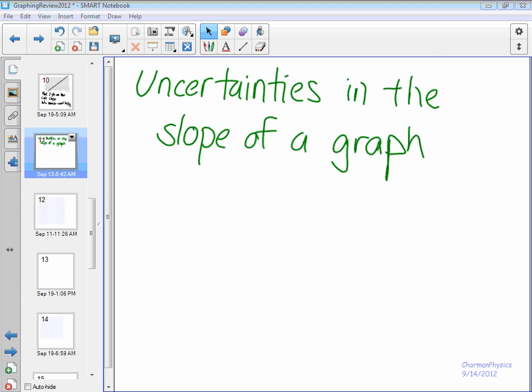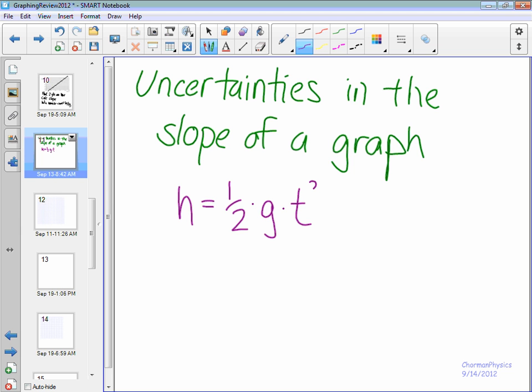Don't worry about how it is that they've graphed height against time squared. We're going to cover that in the next video on linearization. For right now, know that the format looks like the following: h equals one half g times t squared. And what this can look like, what we can replace this as, is y equals m times x. This is from our slope-intercept form.